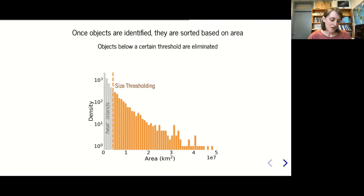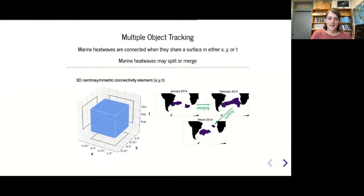Once you have all those objects, you calculate the area and form a distribution. We're interested in very large persistent marine heat waves, not so much smaller heat islands that might represent an eddy. We define a threshold and only keep objects larger than the threshold.